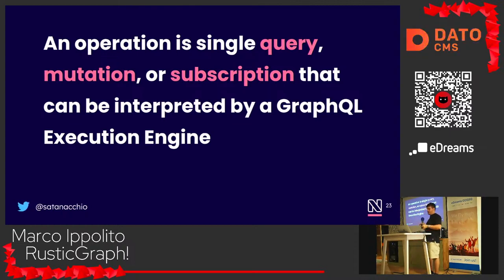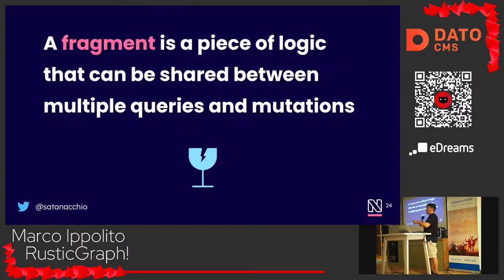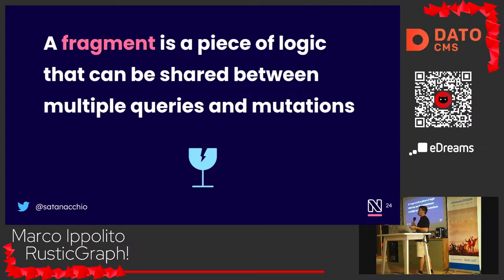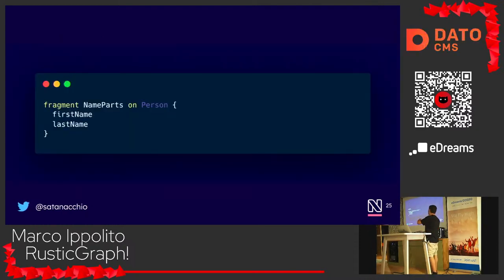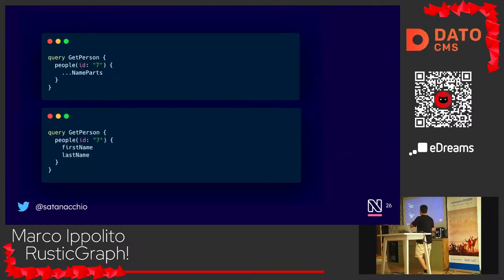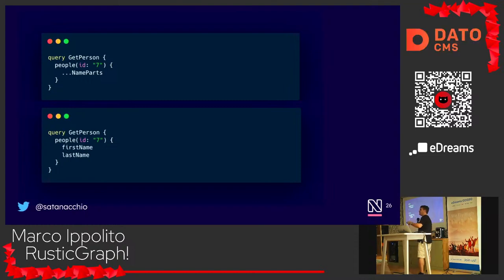GraphQL is also important because it was originally just a query language, but then they noticed you might also want to change information on the backend. So they invented mutations, and also fragments — pieces of logic that can be shared between multiple queries and mutations. Instead of duplicating code, you define a fragment once and reuse the same piece across many queries.